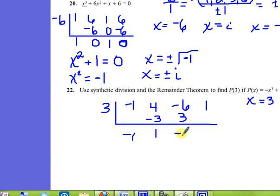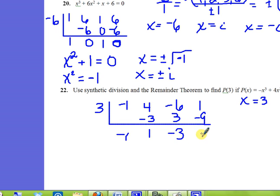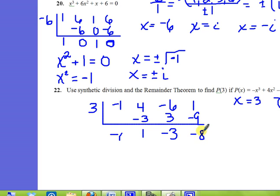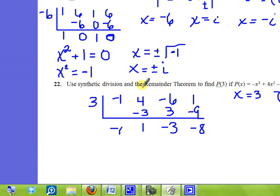Add those together you get negative three. Three times negative three is negative nine. Add those together you get negative eight. Now we've got to interpret this answer because we've just used synthetic division and then it says and the remainder theorem.